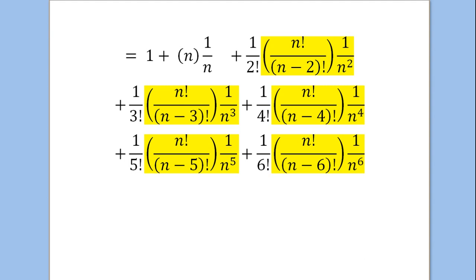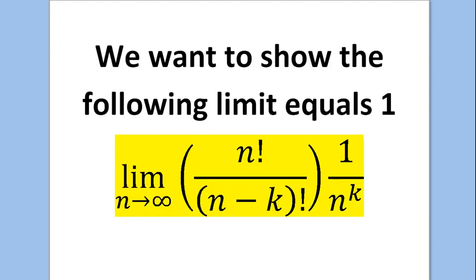If they're all equal to 1 when you take the limit, then that just leaves you with 1, plus n times 1 over n which is just 1, plus 1 over 2 factorial, plus 1 over 3 factorial, plus 1 over 4 factorial, and so on to infinity. We're now going to prove that that limit as n goes to infinity is equal to 1. The general form is: limit as n goes to infinity of n factorial over n minus k factorial times 1 over n to the k.